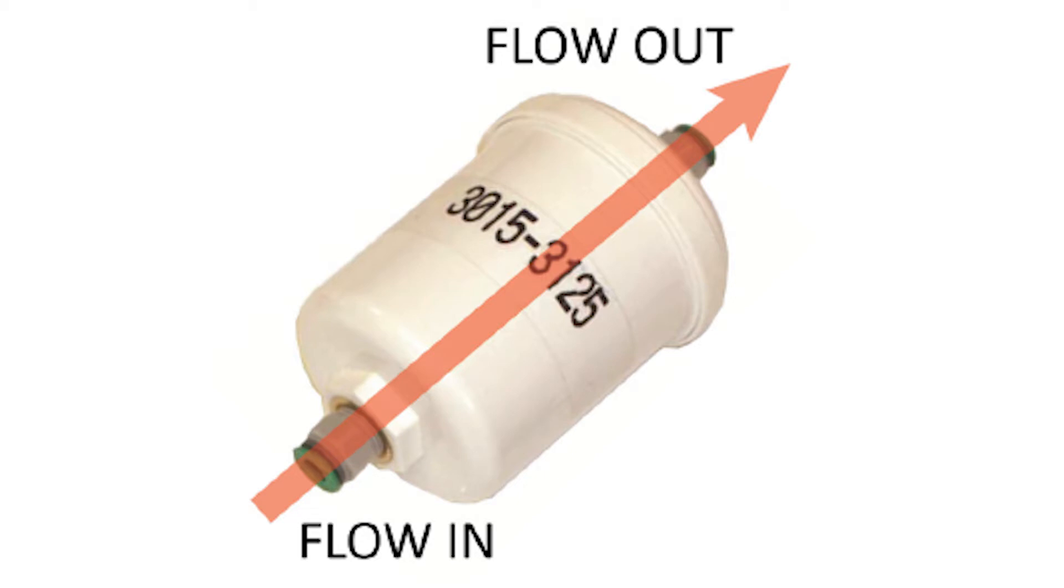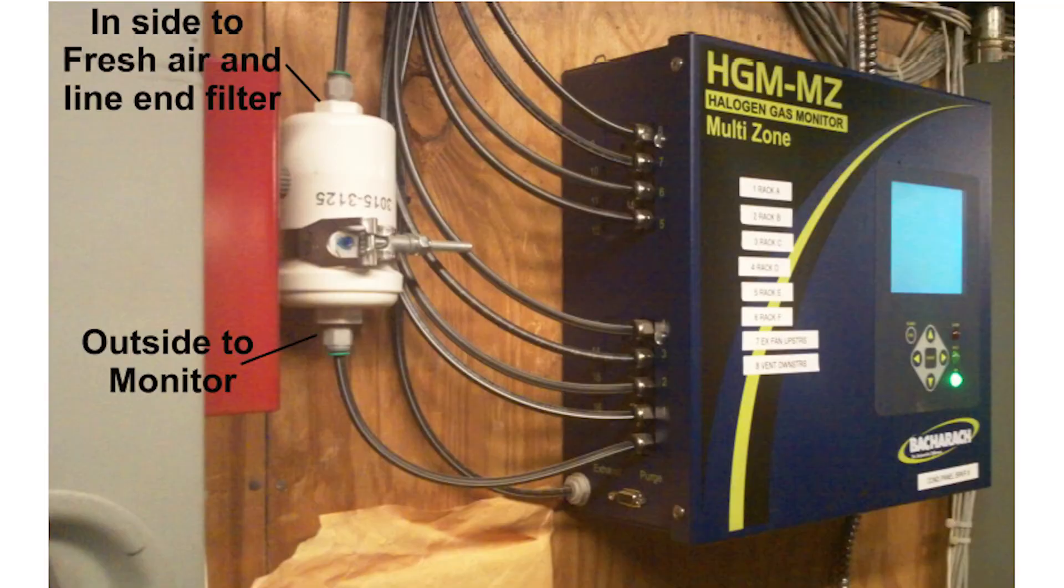Use tubing to connect the inside of the charcoal purge filter to the fresh air line in filter. If the charcoal purge filter is mounted inside, do not mount the filter in any area with ambient refrigerant contamination. This will cause the filter to fail.